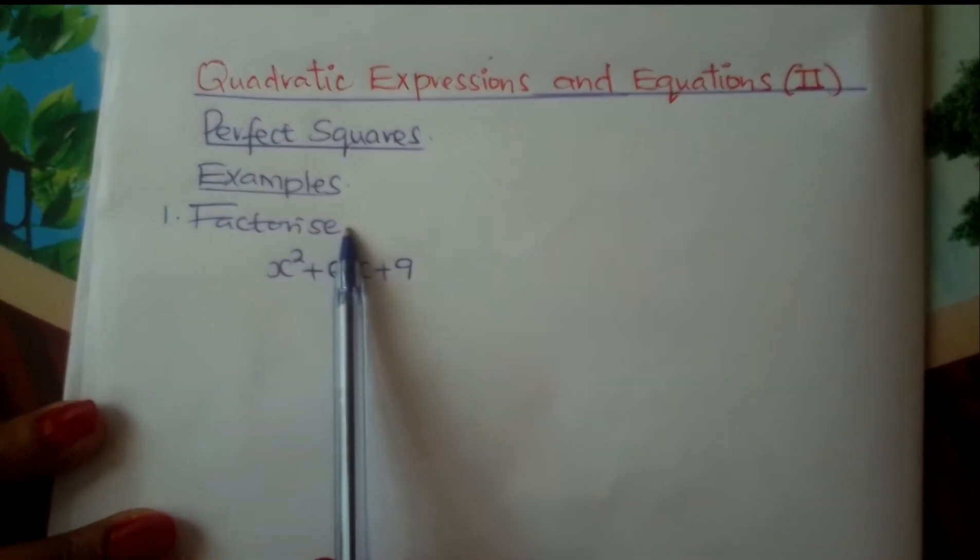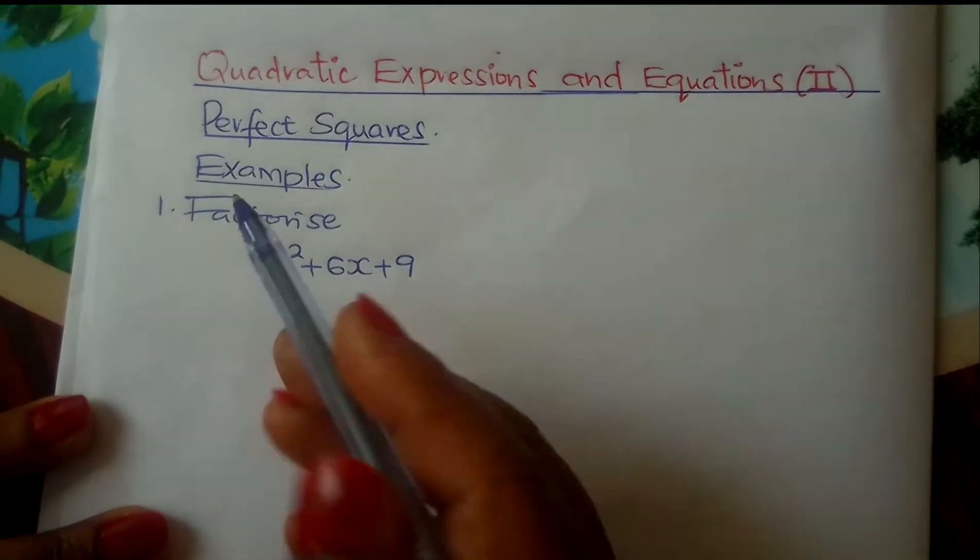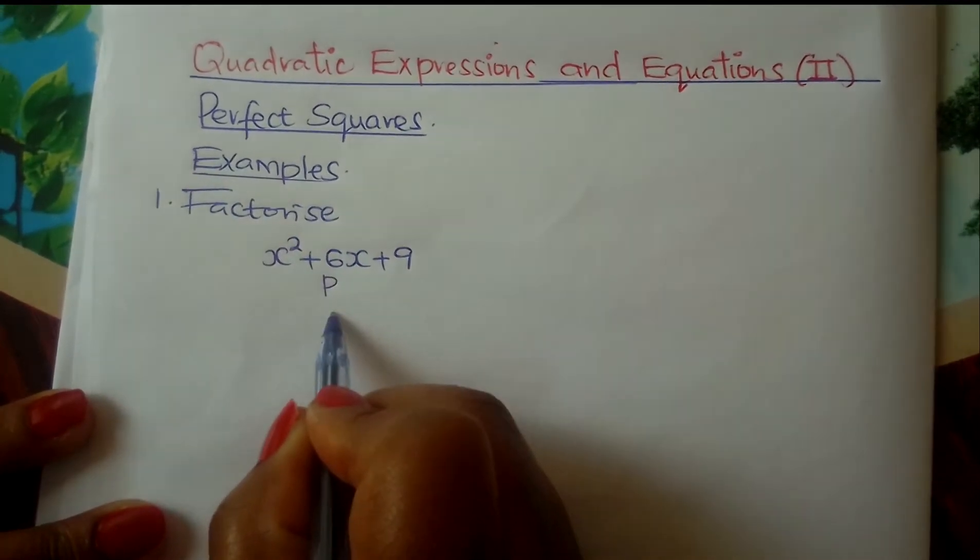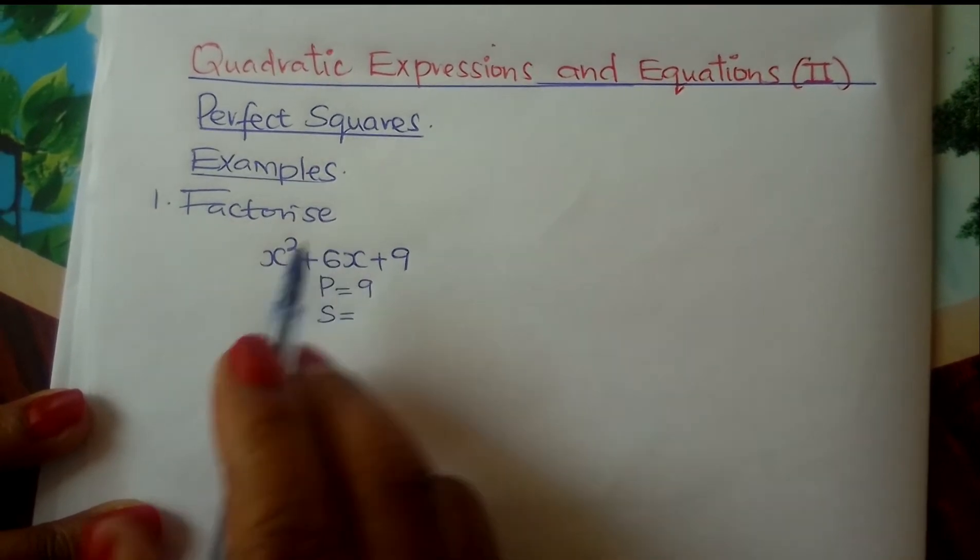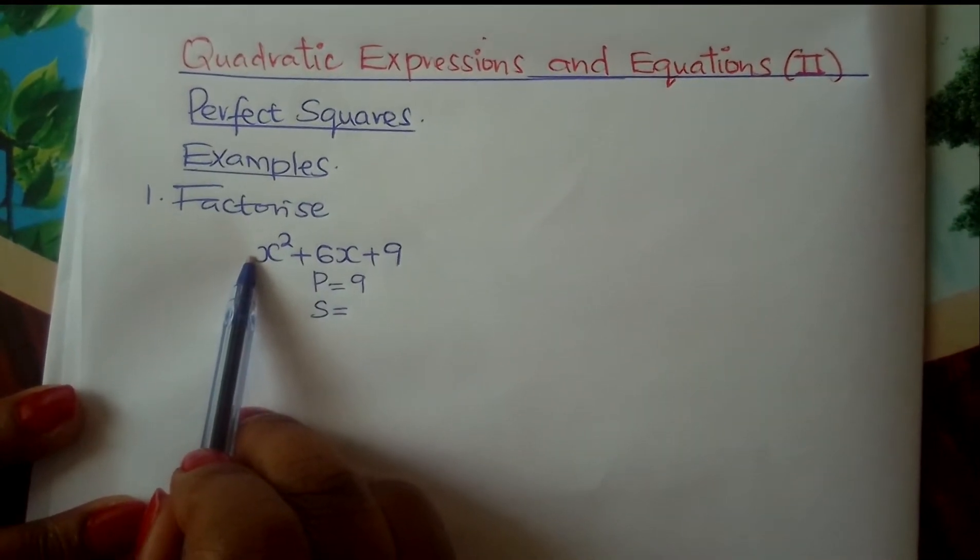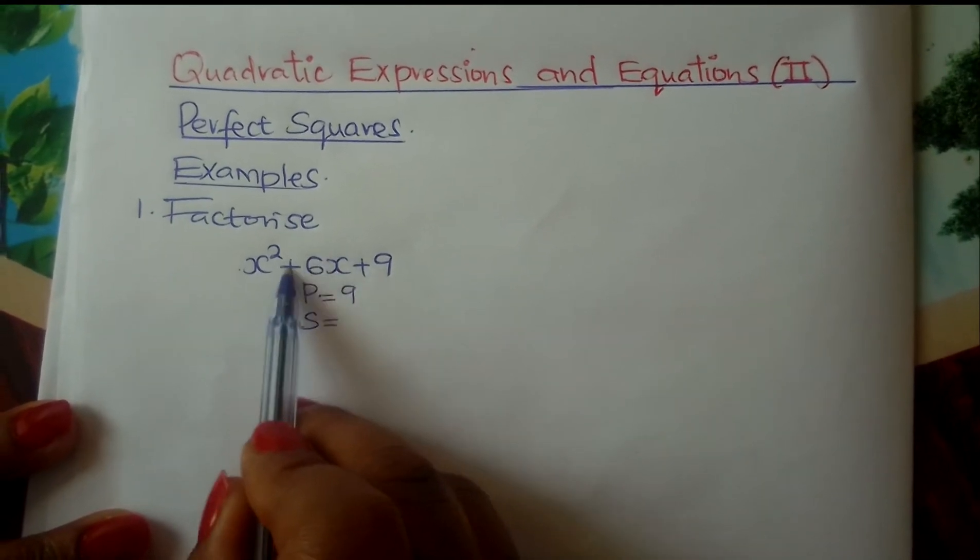Number 1. Factorize x² + 6x + 9. Here we normally write product and sum. The product is 9, the constant. Now that the coefficient of x² is 1, then the sum is 6.